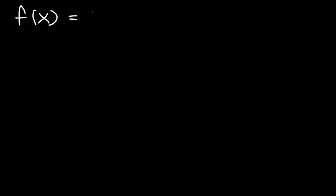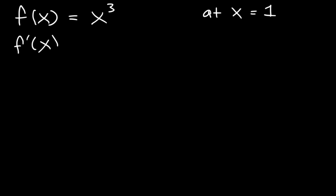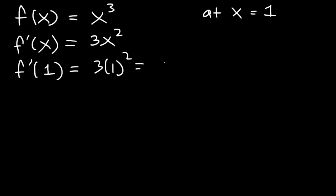So let's say if you're given a function f of x is equal to x cubed, and the question asks: what is the instantaneous rate of change at x equals 1? The instantaneous rate of change is simply f prime of 1 — you just have to find the first derivative and determine its value when x is 1. Using the power rule, f prime of x is simply 3x squared. So the instantaneous rate of change at x equals 1 is 3 times 1 squared, which is 3.